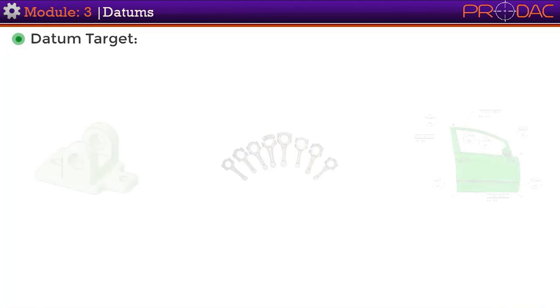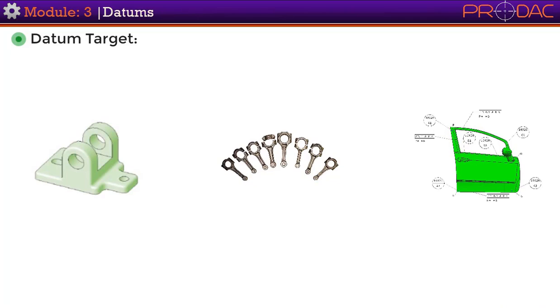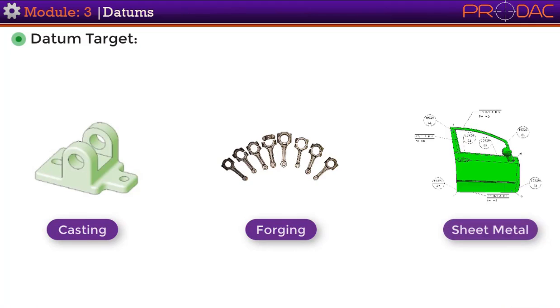What are datum targets and when to use them? This is the topic we'll be talking about during the next few minutes. Some manufacturing processes such as casting, forging, and sheet metal are likely to produce uneven or irregular surfaces which may not be flat across the entire surface area. Datum targets are used to support irregular shaped parts that are not easily mounted in a datum reference frame.